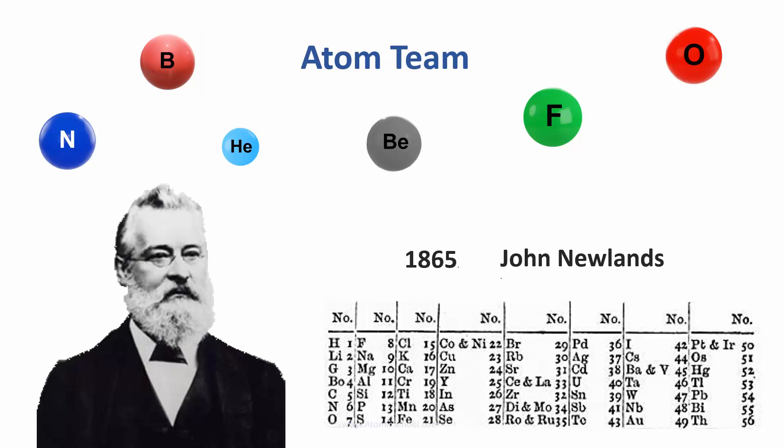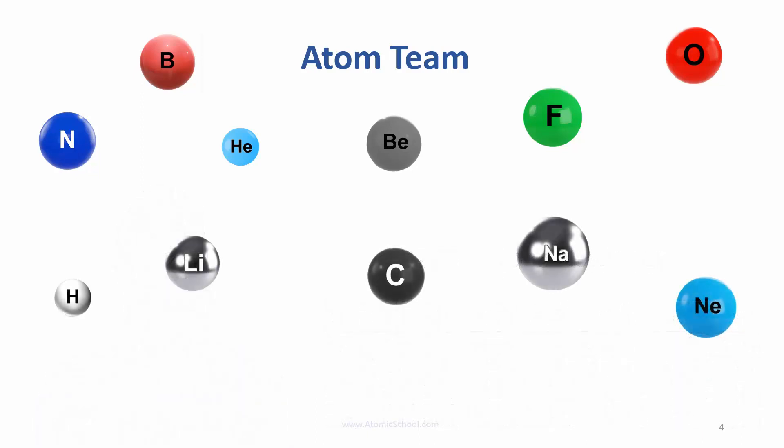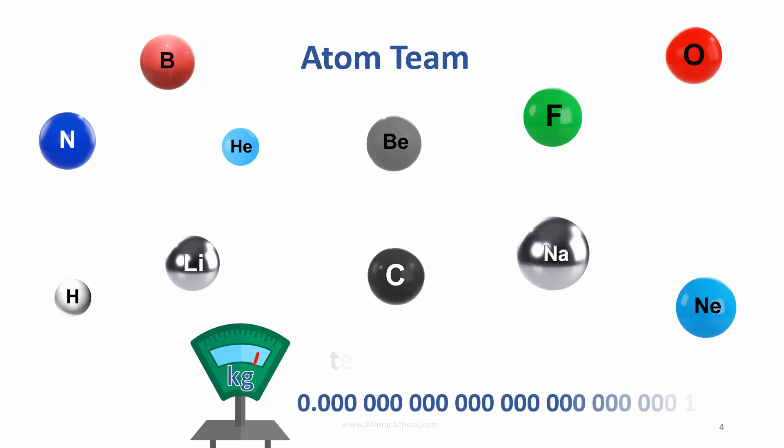But how could scientists make a tiny enough scale to measure the masses of atoms? A single lithium atom weighs about a 10 trillion trillionth of a kilogram. That's 24 zeros after the decimal point. Kilograms are way too big to conveniently measure atoms. Scientists needed a new tiny scale.